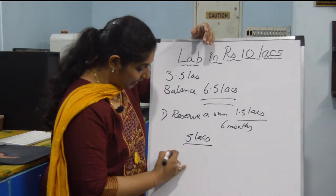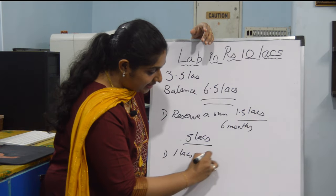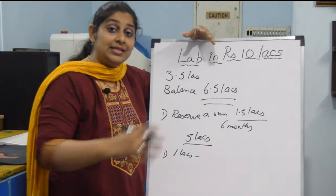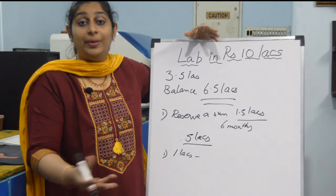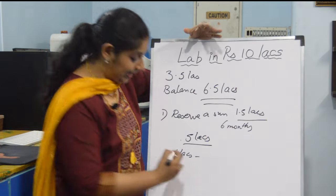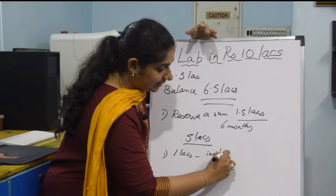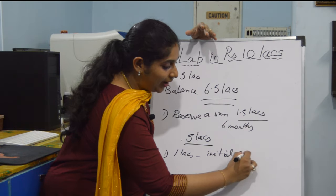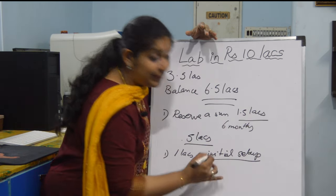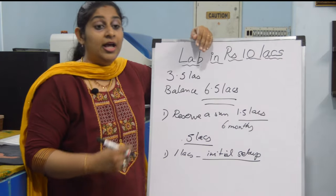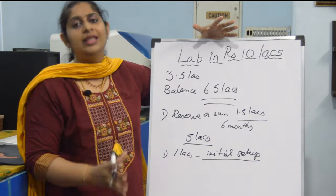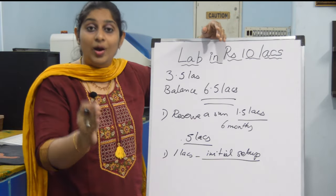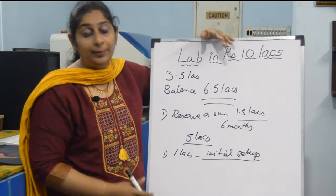In this 5 lakhs, you have to set aside 1 lakh rupees for the initial basic, the chair, table, the consumables, the microscope, the incubator and all these initial setup, you have to set aside an amount of around 1 lakh, which will include all the basic facilities, the phlebotomy chair, the lighting, the syringes, everything, all these consumables and everything, you can constrain it to 1 lakh and you can set your laboratory.